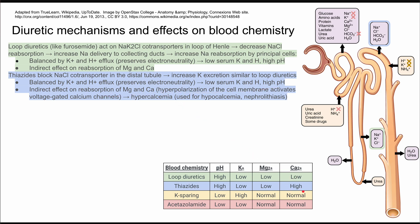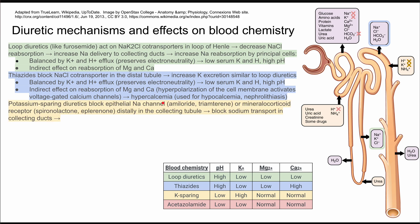Thiazides also have an indirect effect on calcium reabsorption. Unlike loop diuretics, calcium ends up high with thiazides. The mechanism isn't completely elucidated, but it involves hyperpolarization of cell membranes, which activates voltage-gated calcium channels, leading to hypercalcemia. Because of this, hydrochlorothiazide has been used for hypocalcemia and nephrolithiasis — higher serum calcium means less calcium in the urine, reducing kidney stone formation. Thiazides also cause high uric acid in the blood, which can precipitate gout attacks.